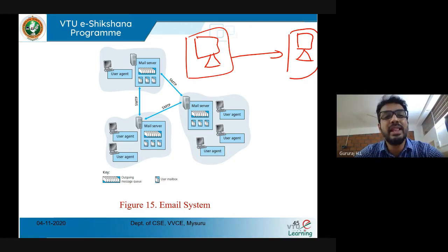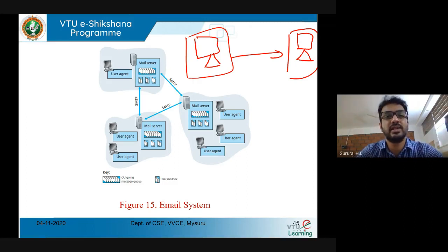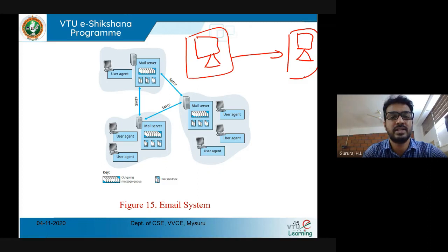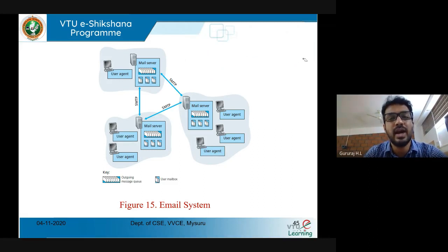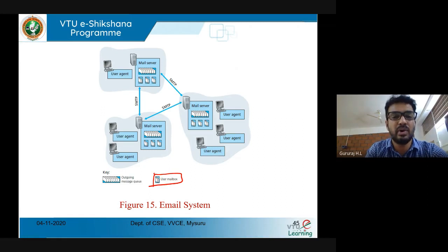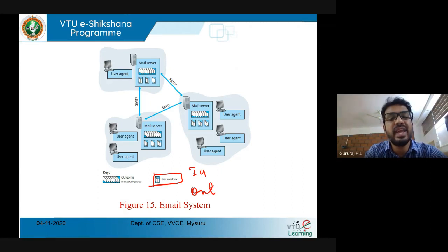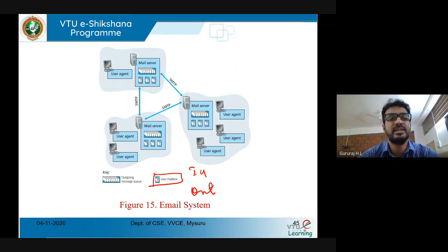That mail will be placed in a queue called the outbox queue, or user outbox. The queue will take the first mail and deliver it to the first respective destination, then take the second mail and deliver to the second destination. If the receiver wants to receive data, they also have a queue called the inbox queue — commonly combined as the user mailbox — with separate storage where new mails are popped up.